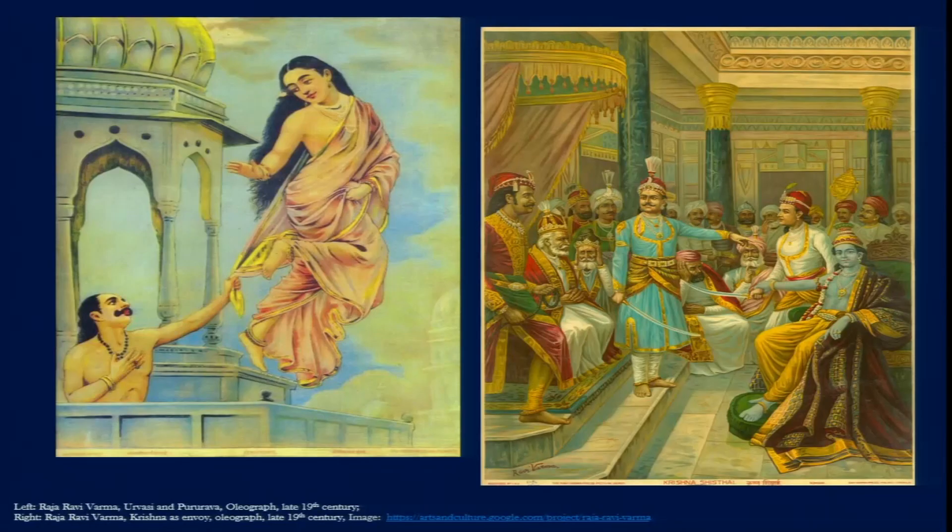Many of Ravi Verma's celebrated paintings were initially made for patrons all across the Indian subcontinent — not only from the Hindu epics but also from epic poems and the literary works of Kalidasa. Those paintings gained such popularity that Ravi Verma decided to make reproductions using a very specific lithographic technique called oleograph.